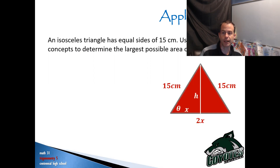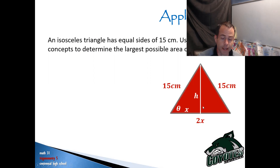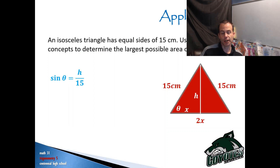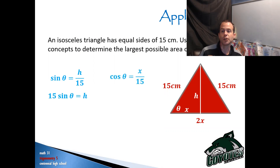So here I go splitting my isosceles triangle in half. I'm going to call this smaller base x and then the height of the triangle will be h. I know that the sine of theta — if I'm calling this angle theta — is h over 15. That gives me h equals 15 times the sine of theta. I also know that the cosine of theta would be x over 15, which gives me x equals 15 cos theta.